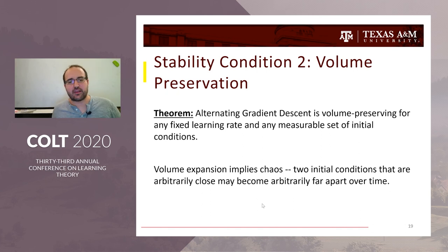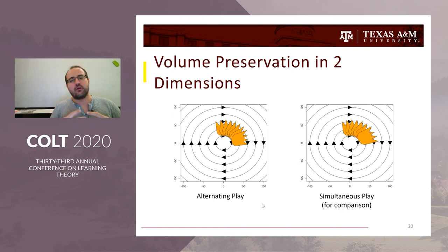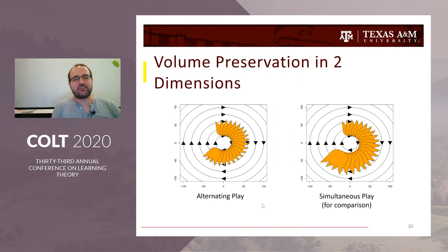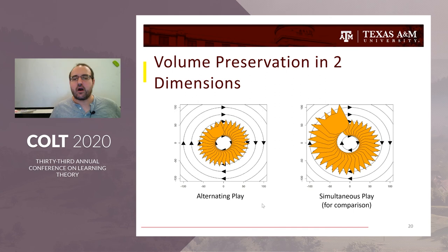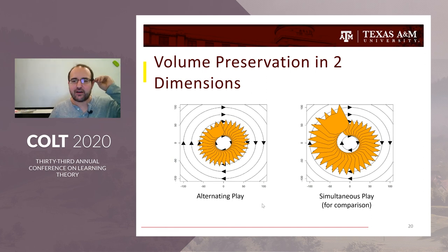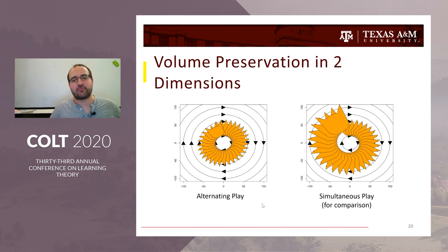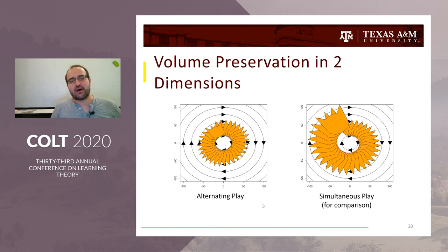Pictorially in two dimensions: on the left, with alternating play, updating every single strategy in a shape — while the shape changes slightly over time, the total area doesn't change, which is stable. Alternatively, with simultaneous play, the standard update, the volume actually expands — the left ear and right chin grow further and further apart over time, establishing chaos. So alternating play gets this nice stability condition over its simultaneous counterpart.